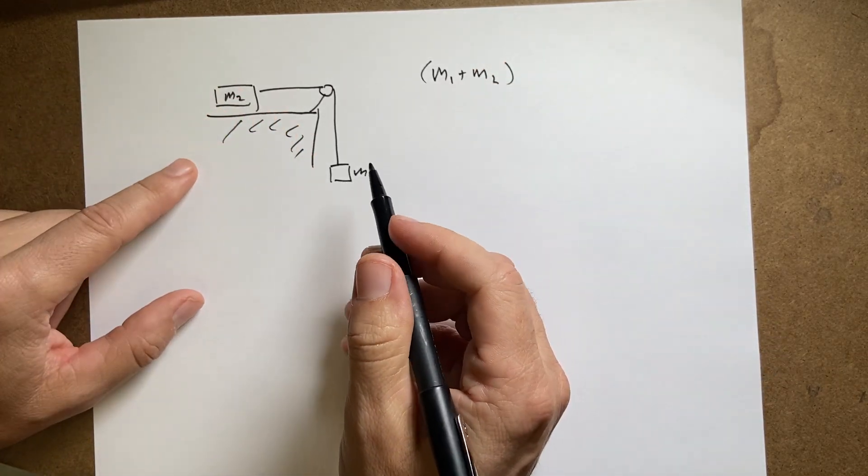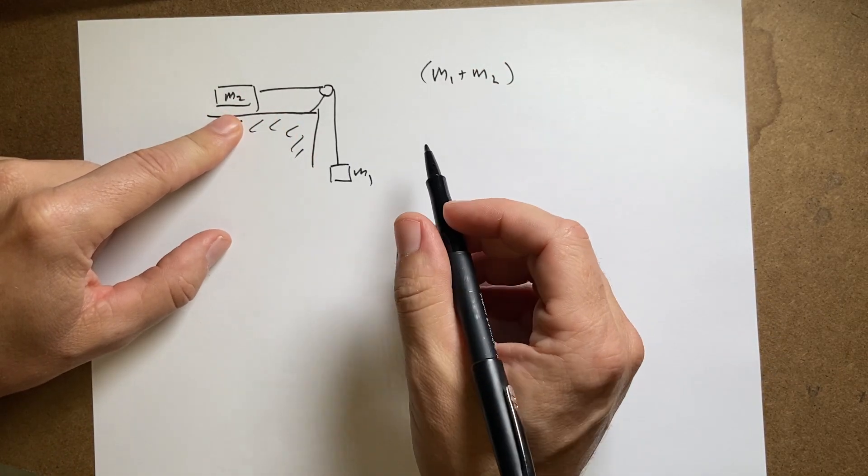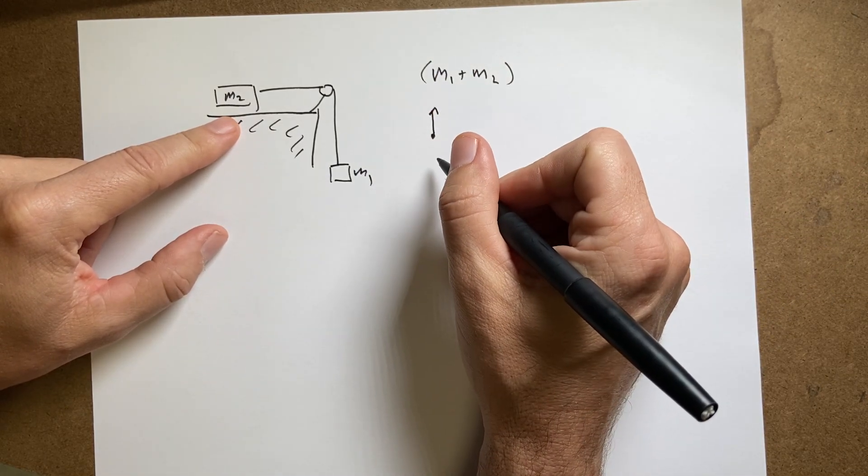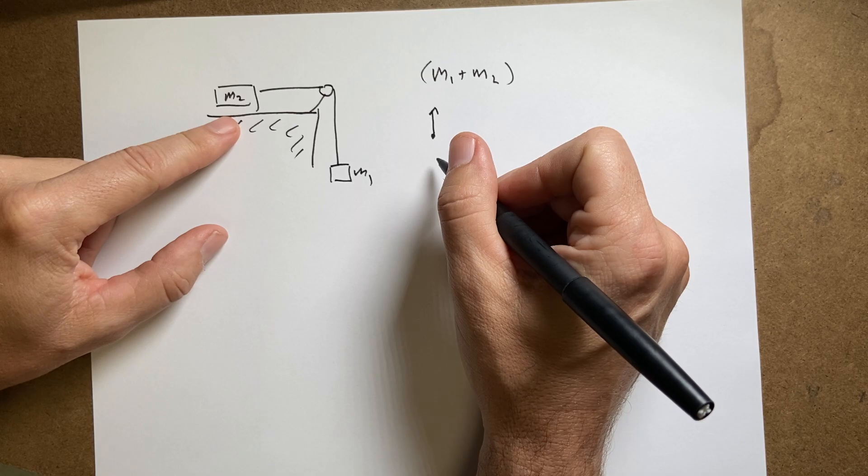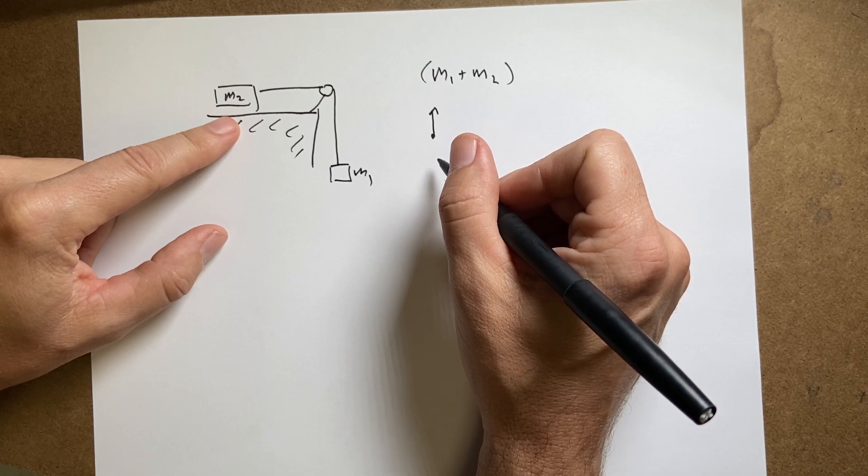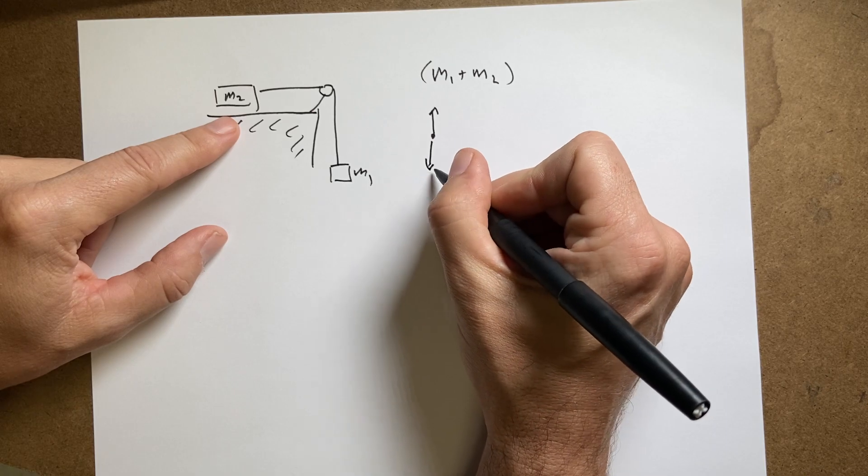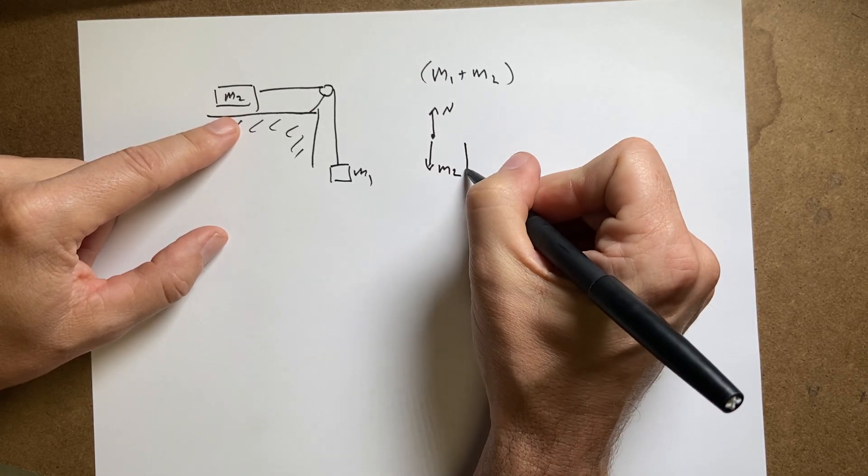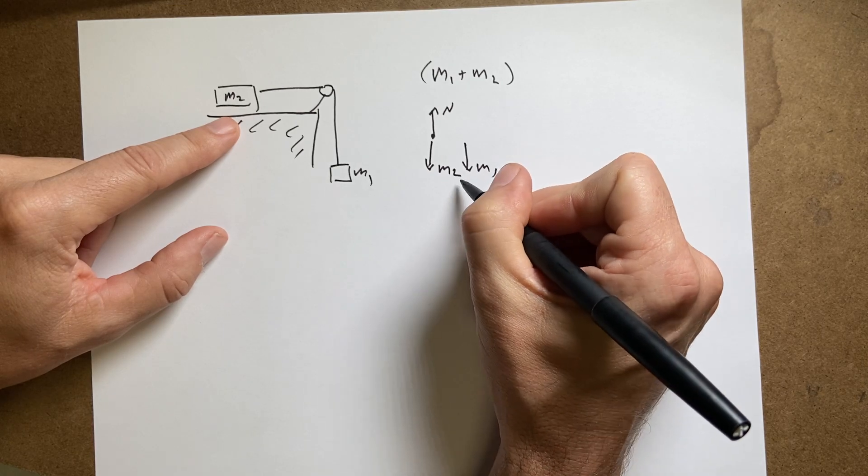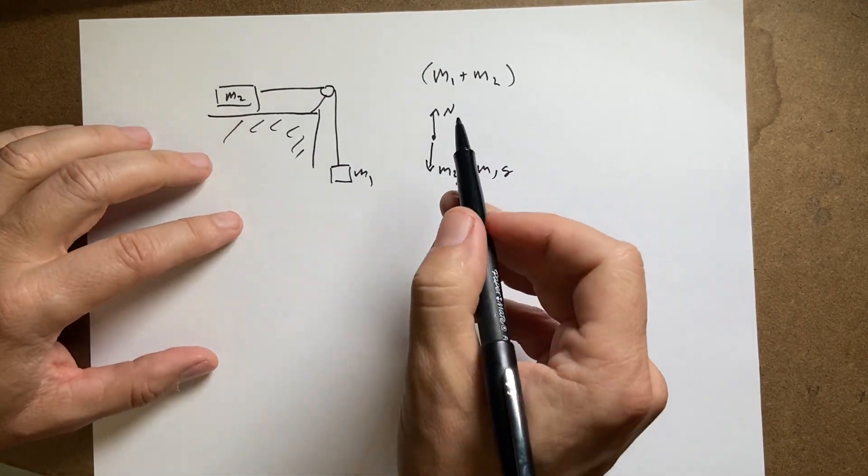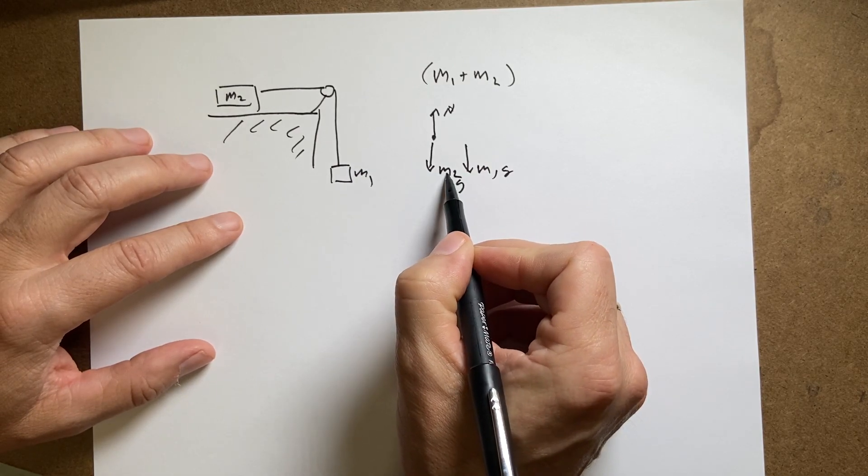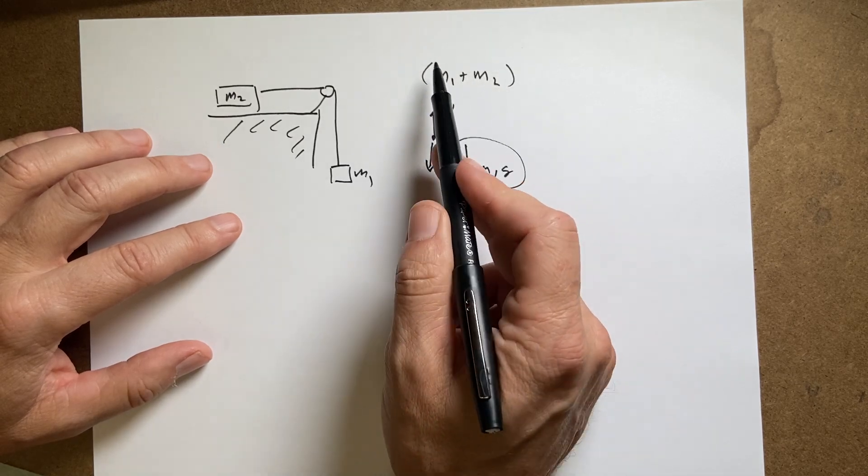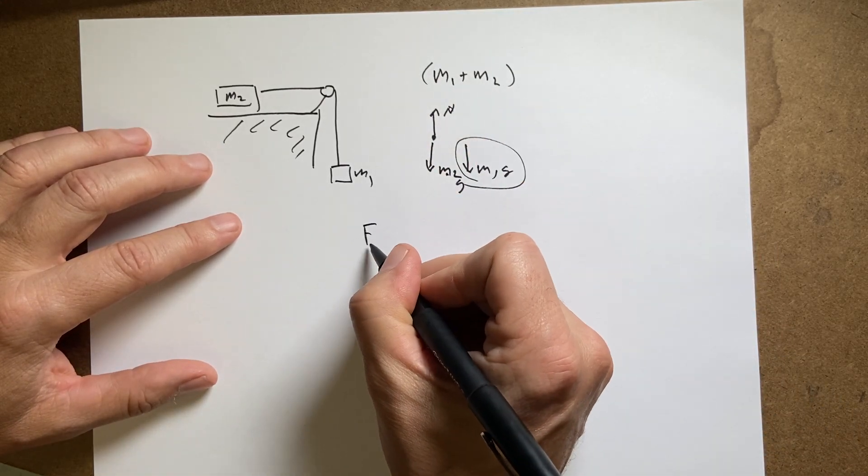And then on that system, what forces do I have? Well, I have essentially just this. I have the normal force pushing up. I'm trying to think. Yeah. And I have m2 pulling down. And then I also have m1 pulling down. m1g, m2g. So these two cancel. So the net result is I just have this one single gravitational force m1g pulling down. But I have to accelerate both masses.